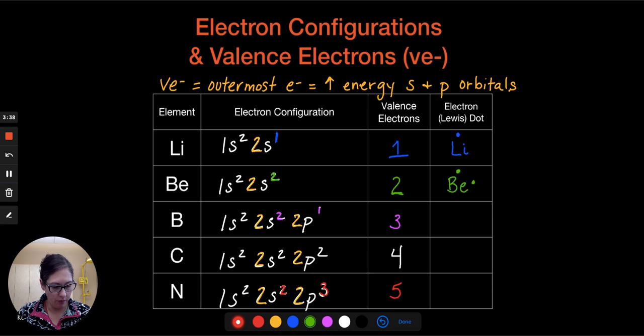When we get to boron, we have 3. So boron's going to have 1, 2, 3 valence electrons that we would write on this diagram. For carbon, there's 4, so 1, 2, 3, 4. And we fill one on each side first.